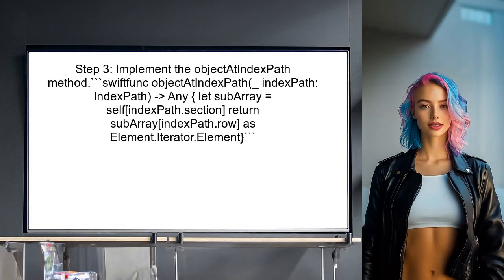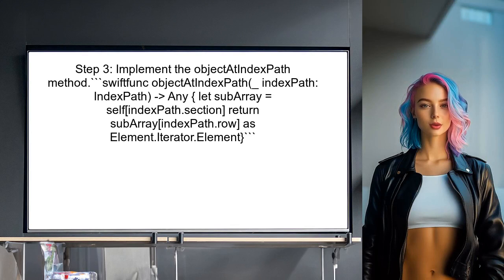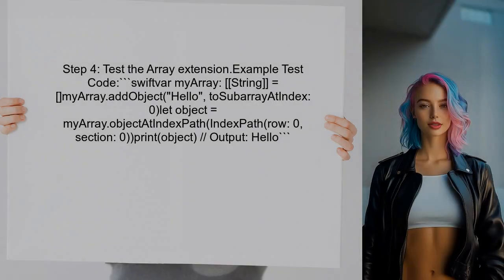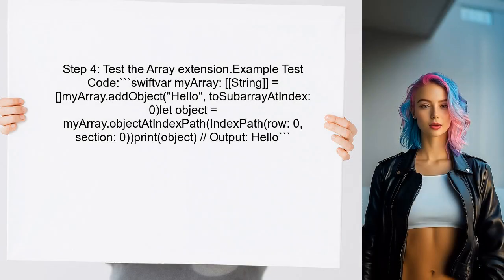Now, the user should implement the method to retrieve an object at a specific index path. This method will access the correct subarray and return the desired object. Finally, the user should test the extension to ensure it works correctly — they can create a two-dimensional array and try adding and retrieving objects.